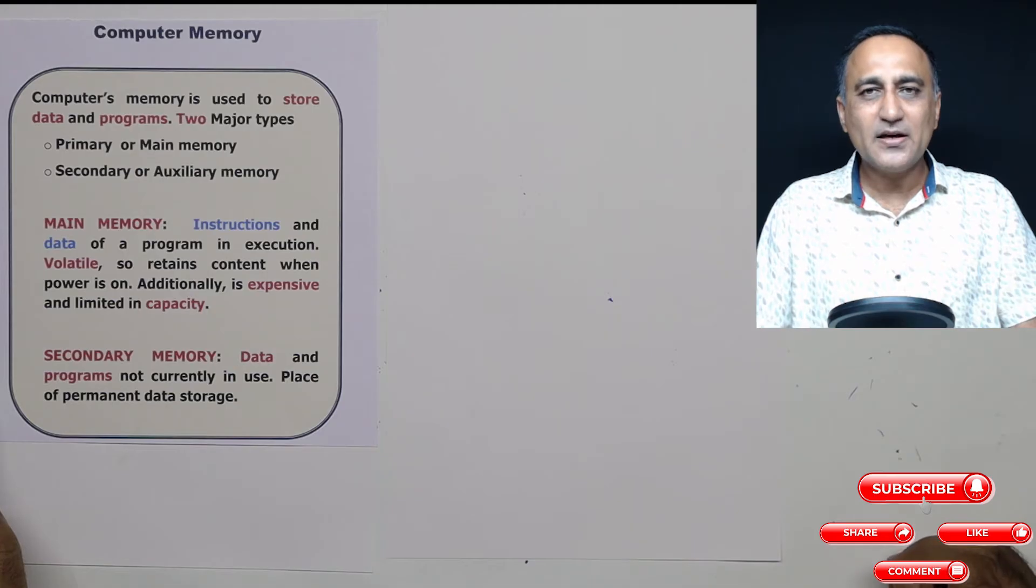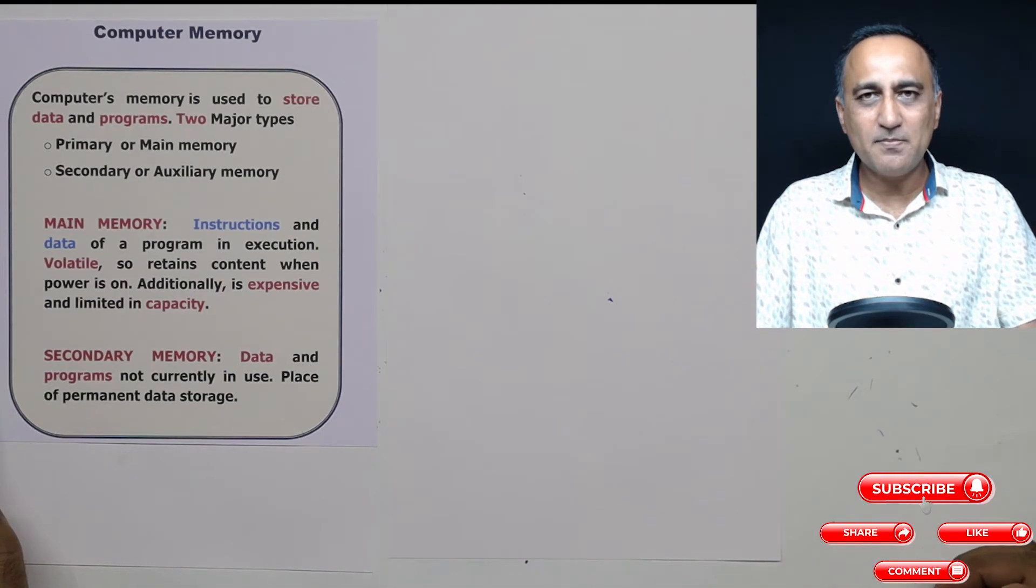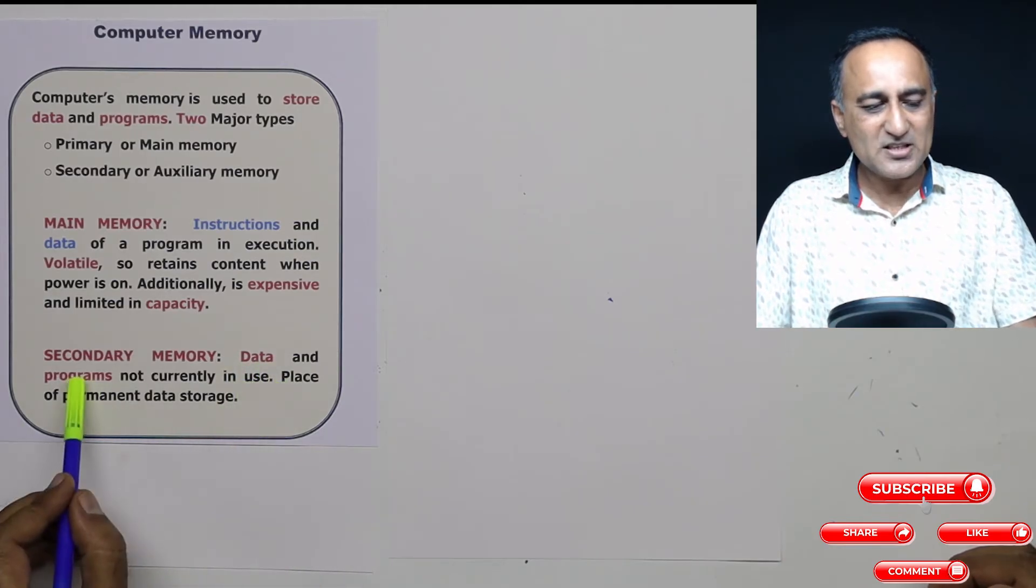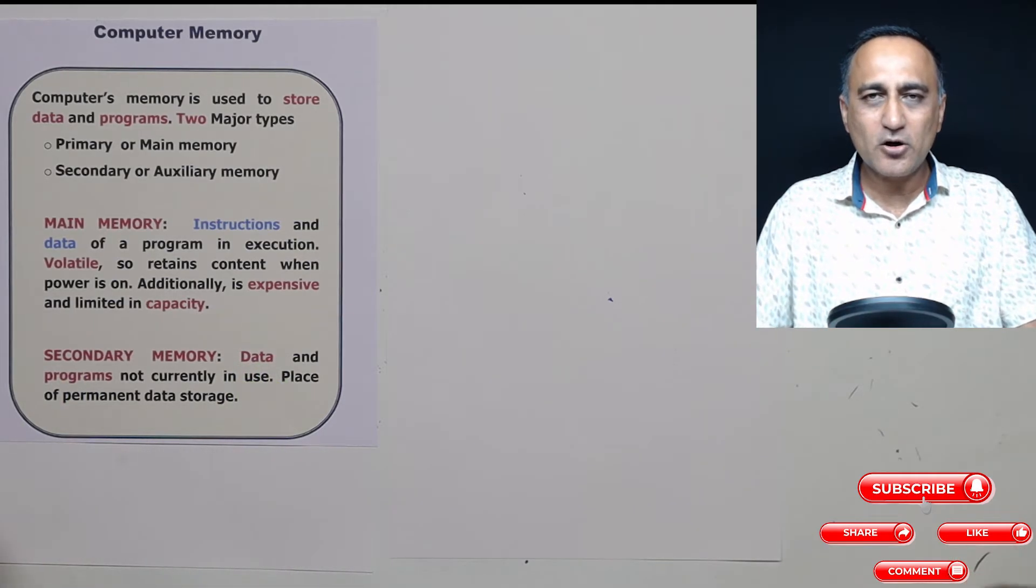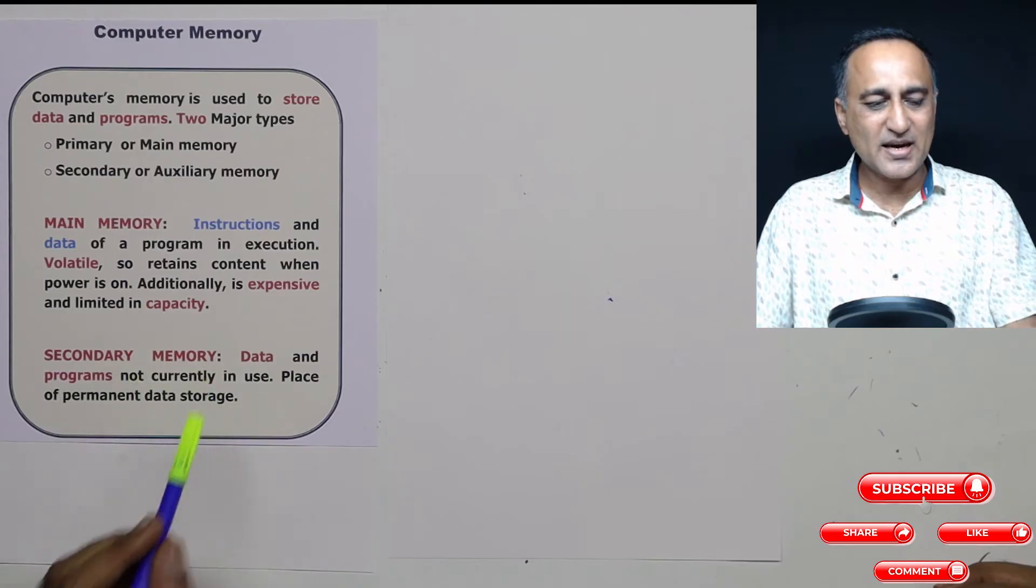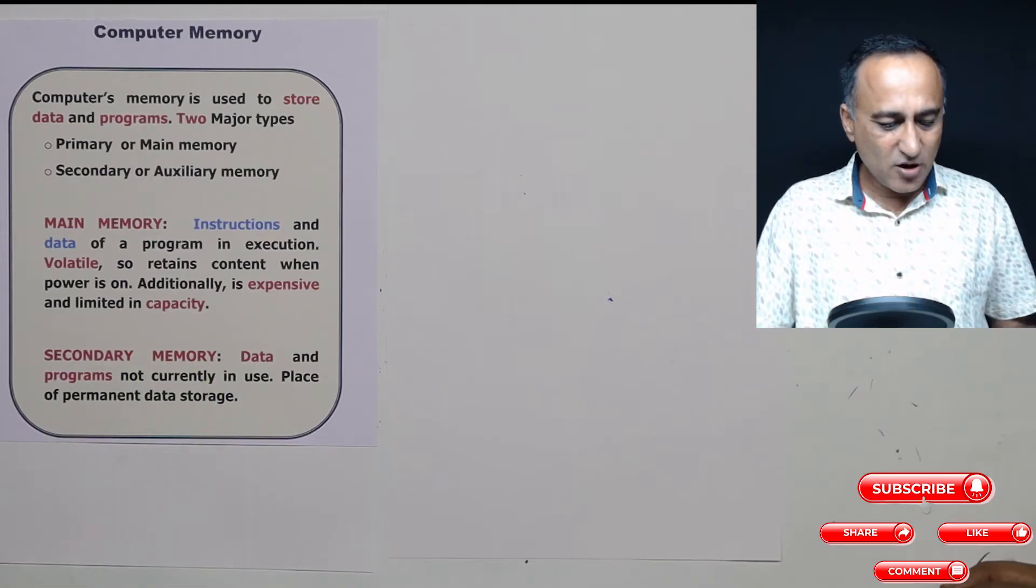What is the purpose of that? You're not going to be running all the programs all the time in the main memory. So the data and instructions not currently required or not currently being used need to be stored somewhere. And the place for that storage happens to be your secondary memory, which generally is your hard disk.